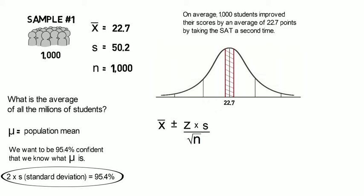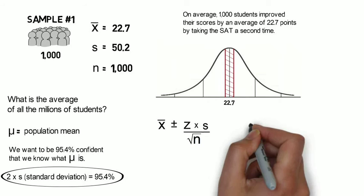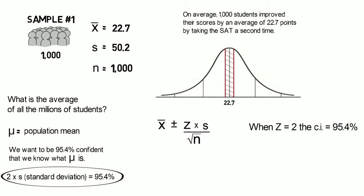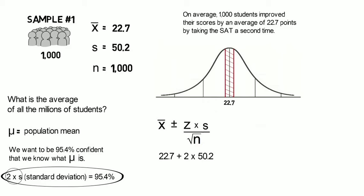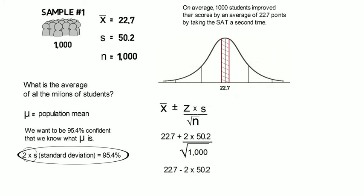And z, our multiplier, in order to give us the confidence interval that we're looking for, 95.4%, we're going to multiply by two. That's what we showed here. Two times the standard deviation gives us 95.4%. So the sample mean plus 2 times standard deviation divided by the square root of the sample size, n. And we take the mean minus 2 times the standard deviation divided by the square root of the sample size, n.